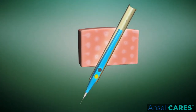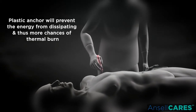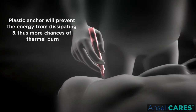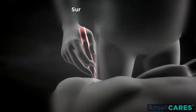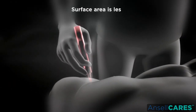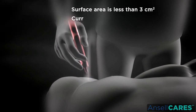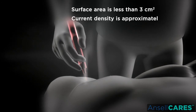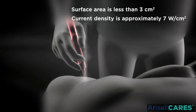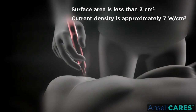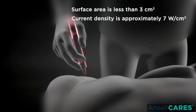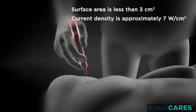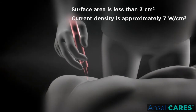The danger occurs if the second conductor contains some insulating material, as in the case of a metal cannula held in place by a plastic anchor. The plastic anchor will prevent the energy from dissipating and increase the likelihood of a thermal burn. Burns from capacitance current may occur when the surface area is less than 3 cm² or the current density is approximately 7 watts per cm². This also occurs when the user reduces the contact surface of their grip to just the minimal fingertips, directing high dissipation of electrical capacitance through that reduced area of glove barrier, potentially breaking down the non-conductive capacity of the glove.